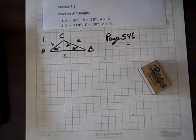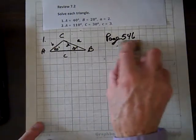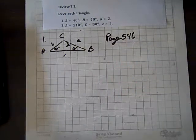Now we're doing the review for section 7.2. We're going to need to use the Law of Sines, which you can find on page 546.